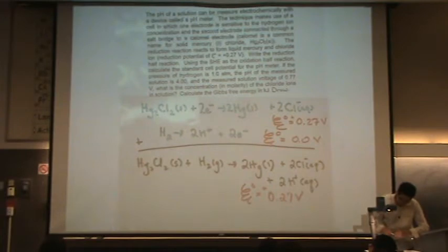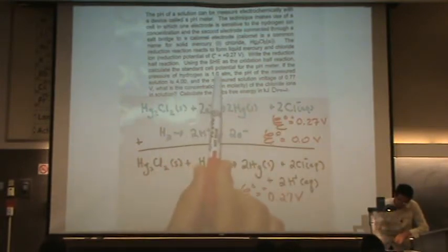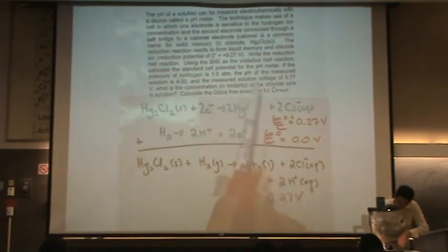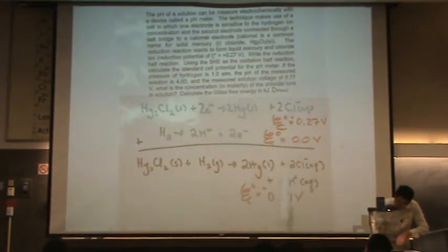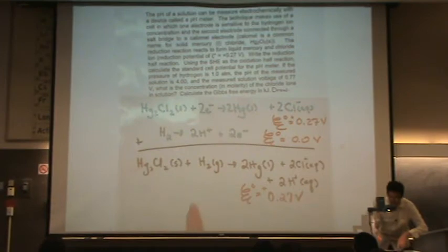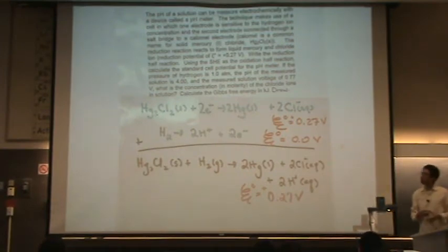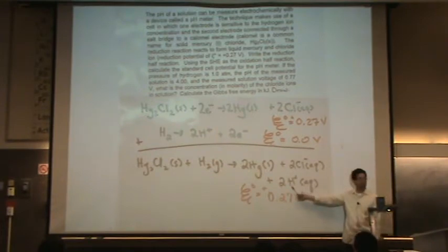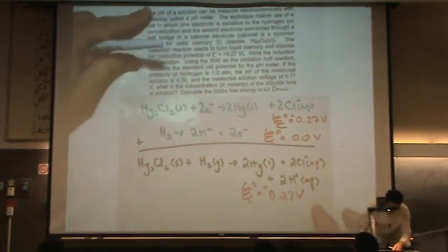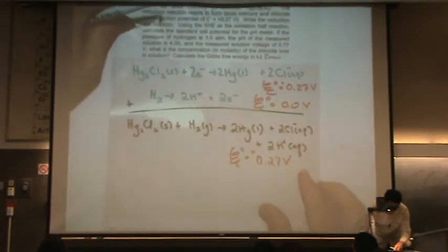Now, it says if the pressure of hydrogen is one atmosphere. Here, here's hydrogen right there. And the pH of the measured solution is four. So, it's reading off four. And the measured solution voltage is 0.77. What's the concentration in molarity of the chloride ion? So, the chloride ion, again, we know the partial pressure of H2 is one. And we know the pH. The pH tells us about what important concentration? The H+ concentration. That's this one right here. So, by telling us the pH, we really know the H+ concentration. Okay. So, I want to find the concentration in molarity.